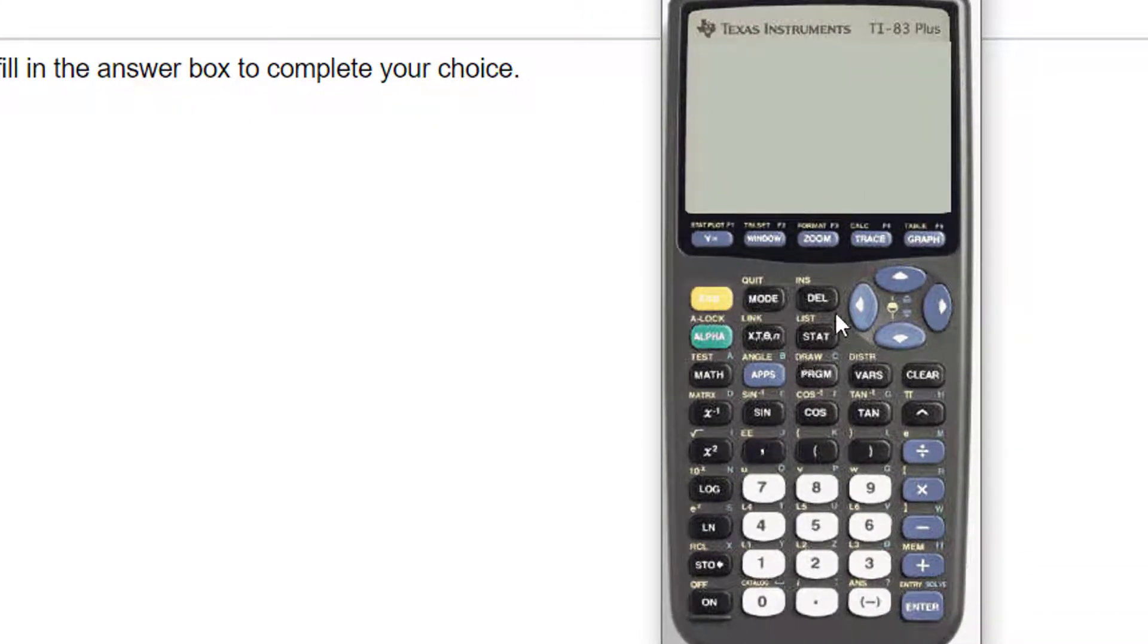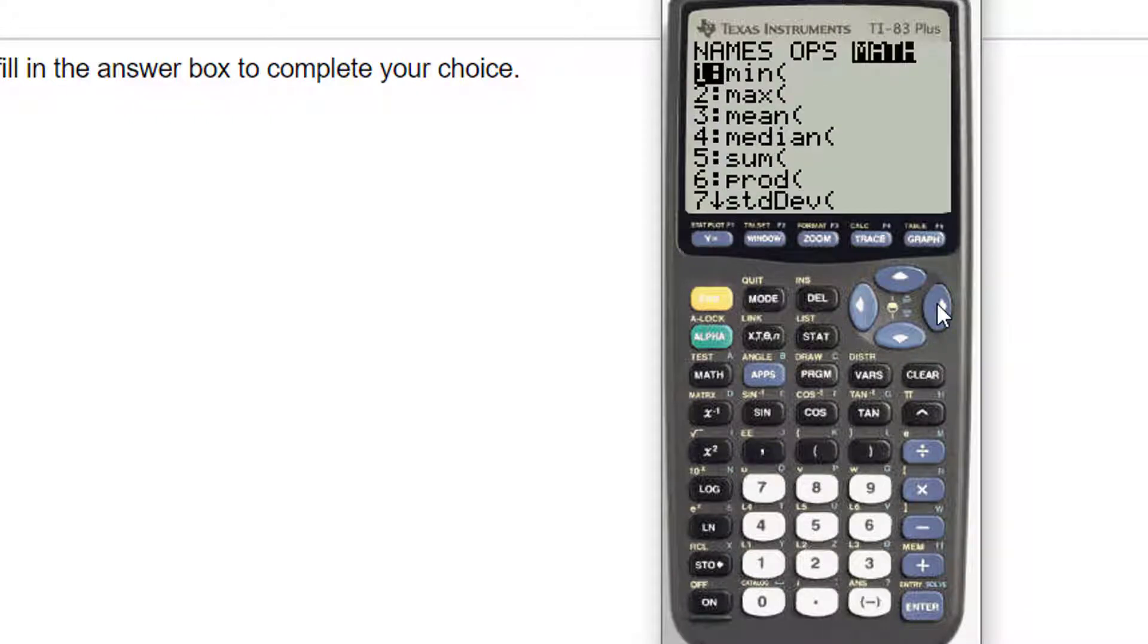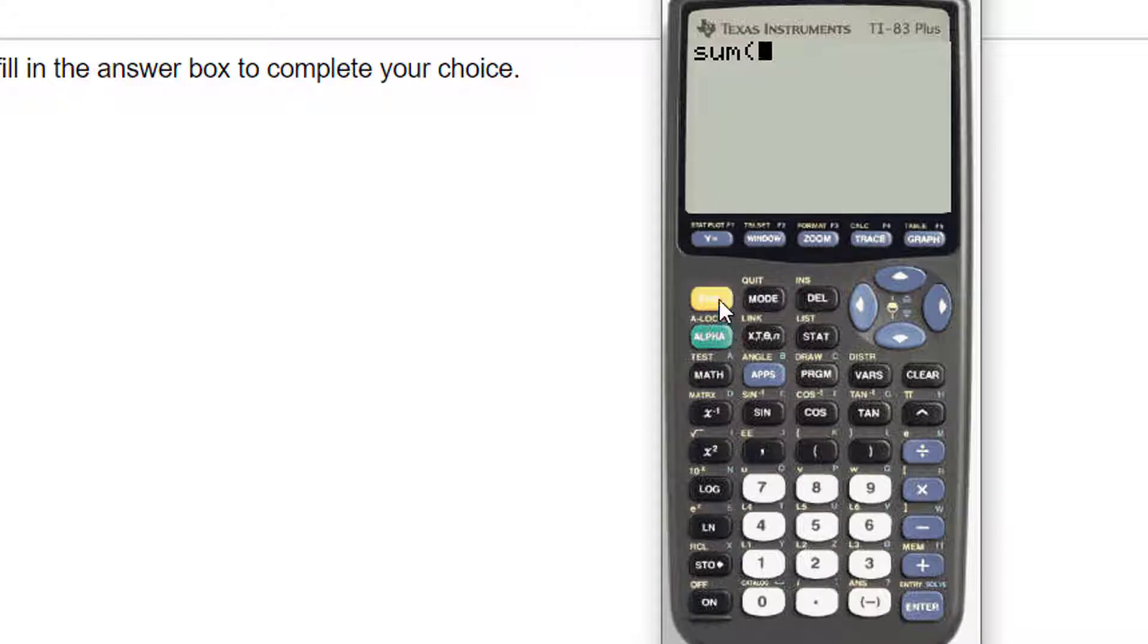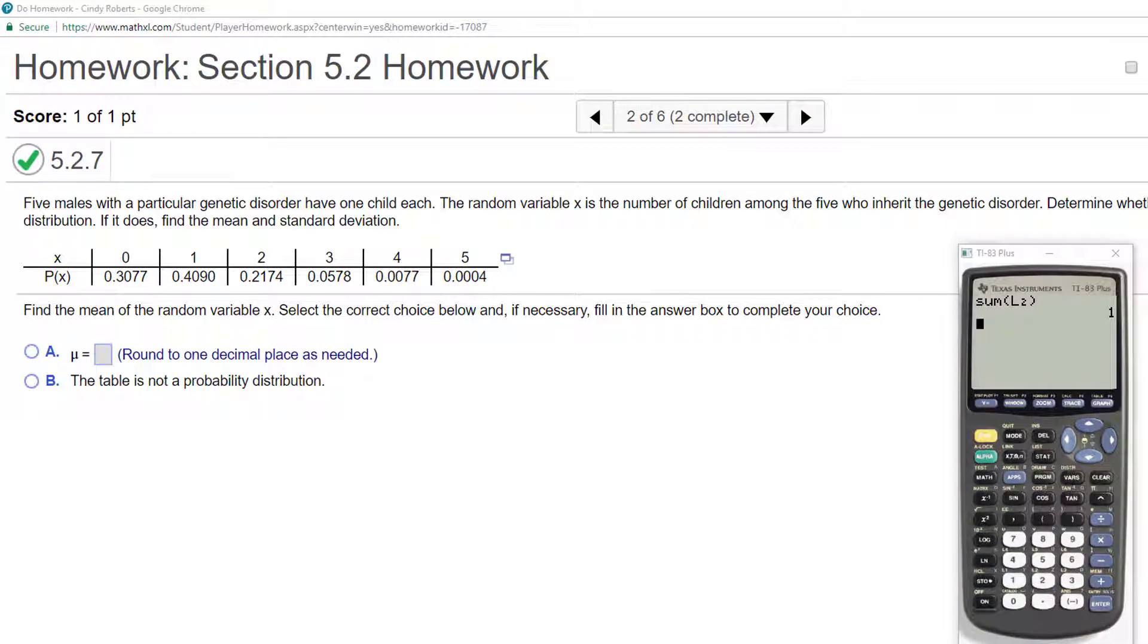Second quit. I'm going to go to second stat over to math down to sum. Hit enter. And second two will give me L2, which was that second column. And see does these all add up to one. And they do. So that's good.